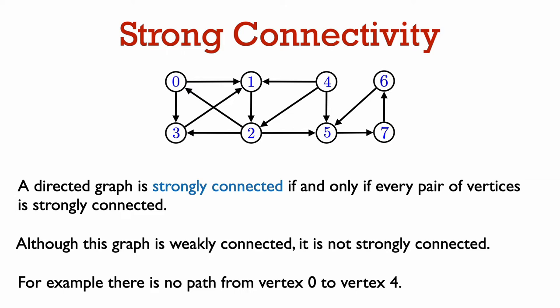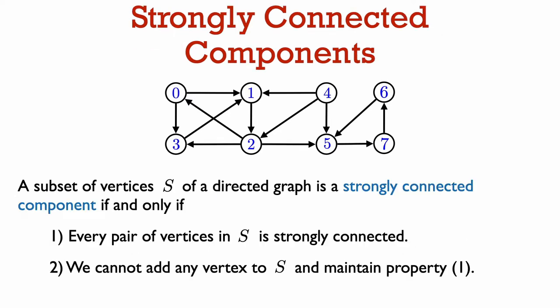We also talked about connected components in undirected graphs — these were maximal subsets of vertices such that every pair of vertices in the subset were connected to one another. Here is the analogous idea with the notion of strong connectivity in a directed graph. A strongly connected component is a subset S of vertices of maximal size with the property that every pair of vertices in S is strongly connected. In other words, it is a subset S such that every pair of vertices in S is strongly connected and we cannot add any additional vertex to S and maintain this property. That is what is meant by saying that S is of maximal size.